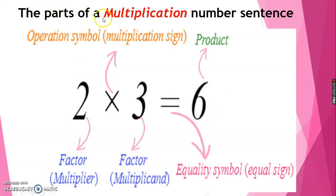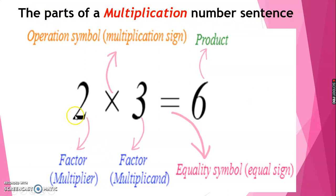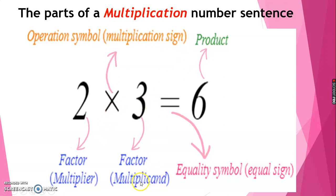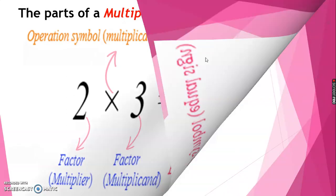Again, the parts of a multiplication number sentence. We have 2 times 3 is equal to 6. 2 is what we call the multiplier. This sign is the multiplication sign. 3 is the multiplicand or factor. This sign is the equal sign, and 6 is the product. Do you understand, kids?